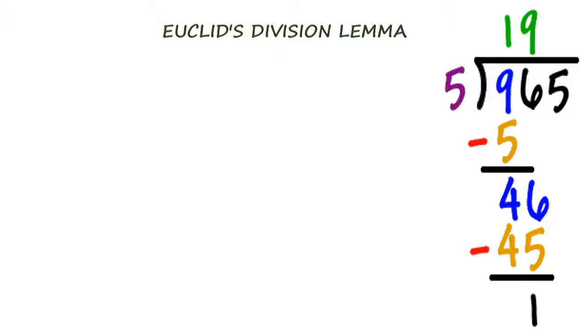Euclid's division lemma. You are all familiar with the fundamental operation of division. A number 'a' divides 'b' if b equals ka for some natural number k.